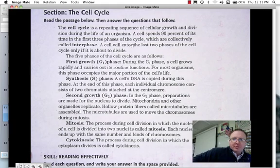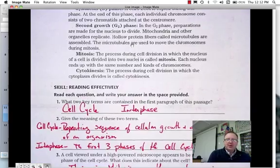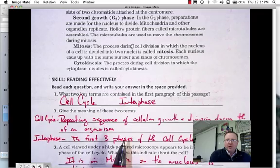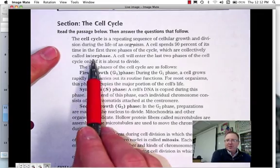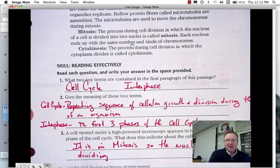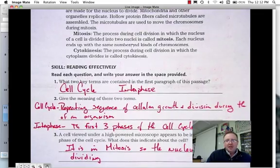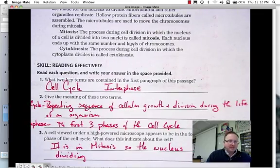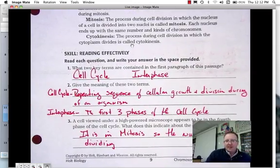Okay, so hopefully you've paused the video. You've answered the questions, and we're ready to take a look at the major events that occur according to the active reading. First two questions we look at are, what are the two key terms contained in the first paragraph of this passage? We have the cell cycle and interphase. We know those are key terms because they're bolded. The meaning of the two key terms: Cell cycle, it's stated right in the reading, is the repeating sequence of cellular growth and division during the life of an organism. And interphase is the first three phases of the cell cycle.